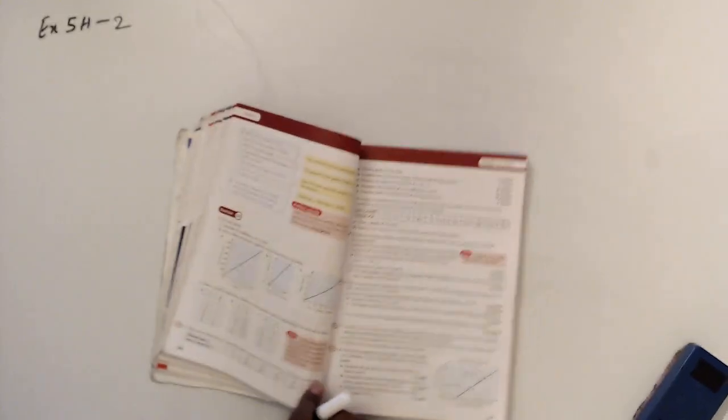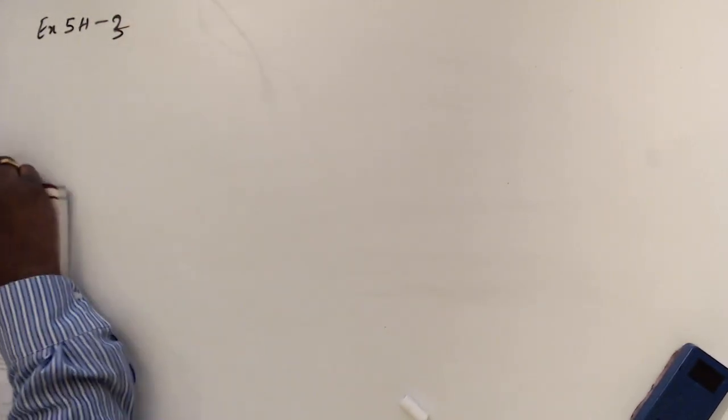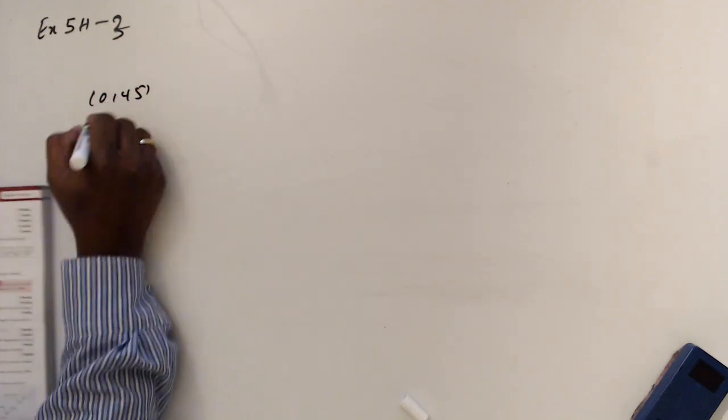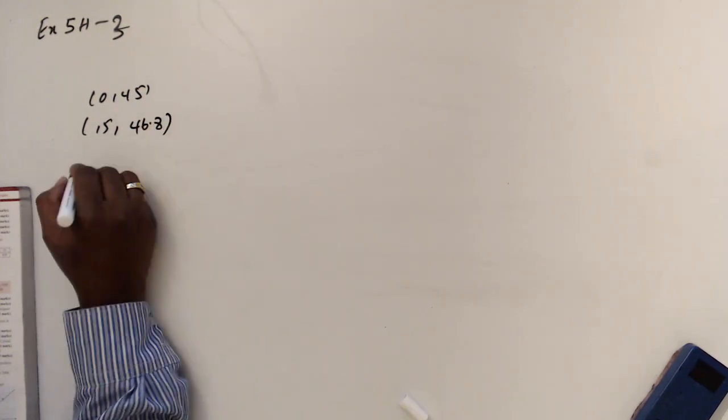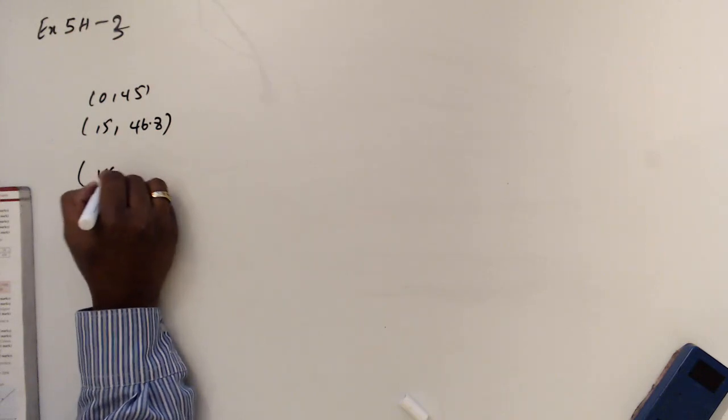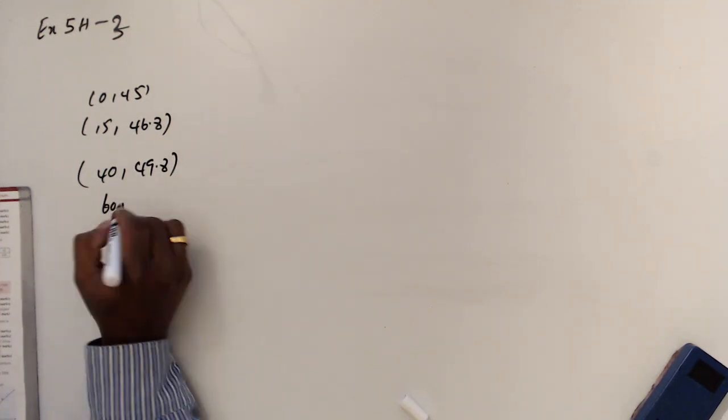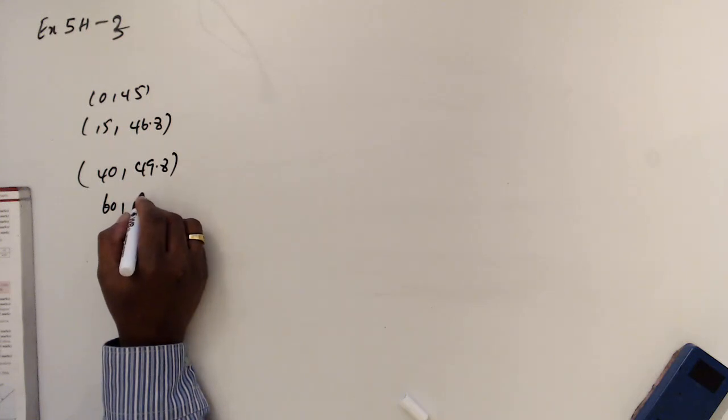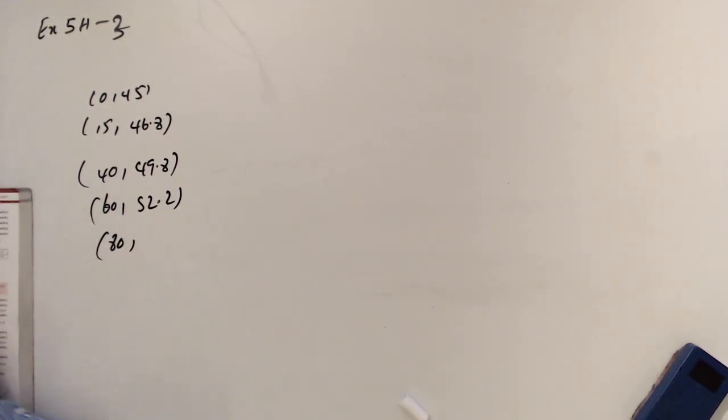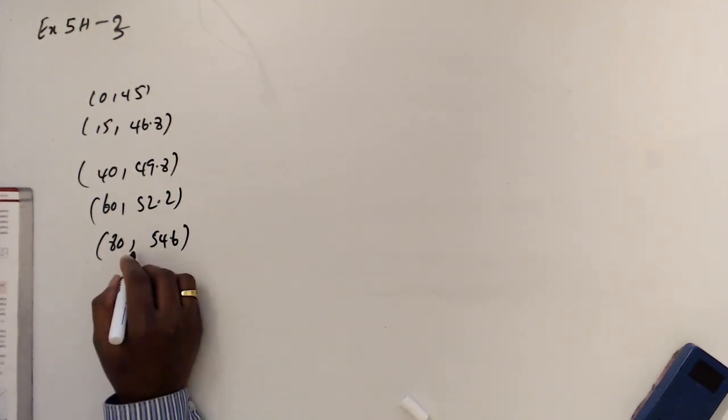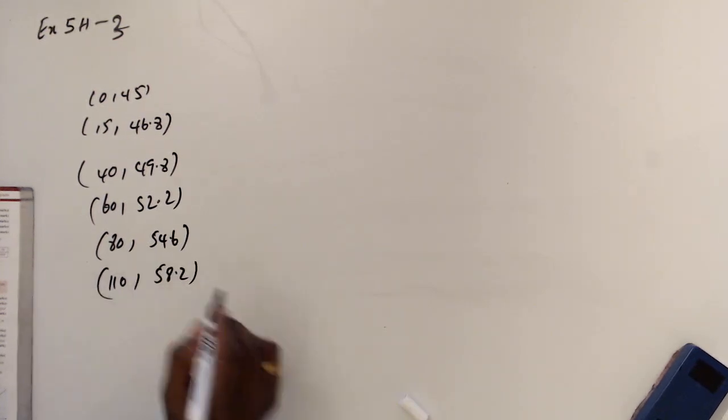Question number 3. The data points are: 0, 45; 15, 46.8; 40, 49.8; 60, 52.2; 80, 54.6; and 110, 58.2. So those are the points.